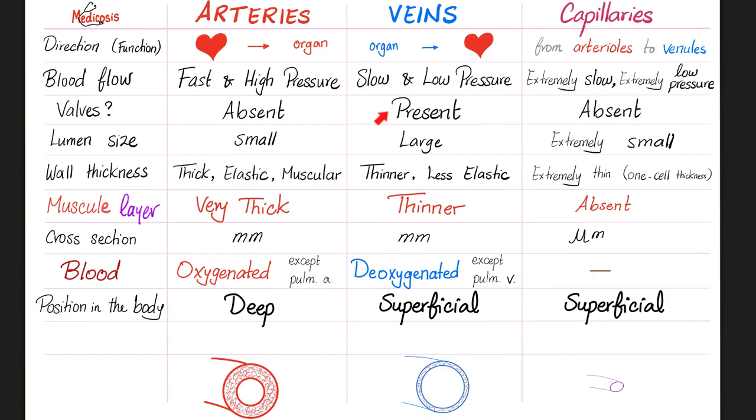Valves. Arteries are valveless. Veins do have valves, except the pulmonary vein. And capillaries do not have valves. Lumen size. The cavity that's in the center. In the artery, it is small. You know why? Because the muscles take the entire space. In the veins, they are large, because the muscles are thinner than the artery. And then, the capillaries are extremely tiny. Tell me about the wall. In the artery, the wall is very thick, elastic, and muscular. But in a vein, the wall is thinner and less elastic. Capillaries are extremely thin. They don't have muscle. They just have one cell thickness. And this cell is endothelium.